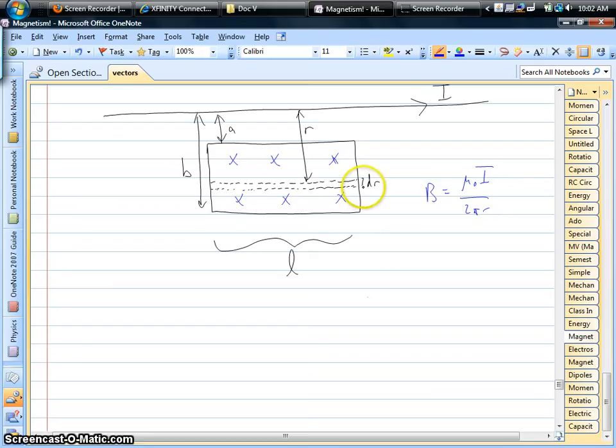Basically that means we have to set up some kind of integral. Now this little dashed line, I'll shade in this little skinny rectangle here. That's a little slice of the area of the rectangle. And what we can do is we can find a small amount of flux that's going through that little rectangle.